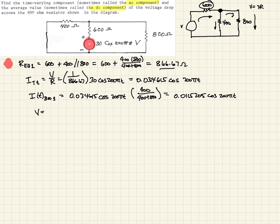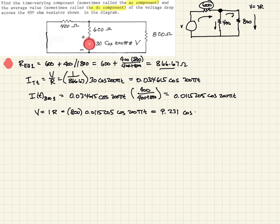Now for the voltage, by Ohm's law V equals IR: 800 times 0.0115205 cos(200πt). When we multiply that out, we get 9.231 cos(200πt) volts. This is the voltage across the 800 ohm resistor from our AC source — this is our AC component, the first thing they asked for.